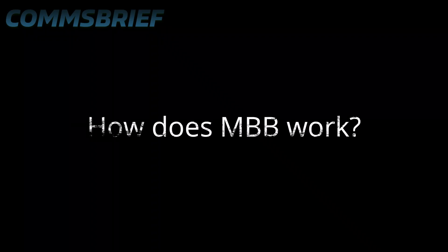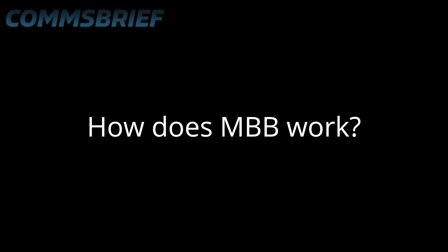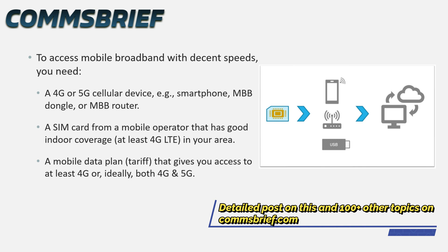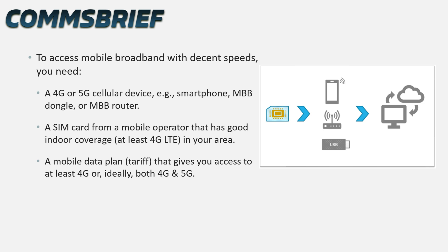If you want to access mobile broadband with decent speeds, here is what you need: a 4G or 5G cellular device such as a smartphone, mobile broadband dongle, or mobile broadband router; a SIM card from a mobile operator that has good indoor 4G LTE coverage in your area; and a mobile data plan or tariff that gives you access to at least 4G, or ideally both 4G and 5G.